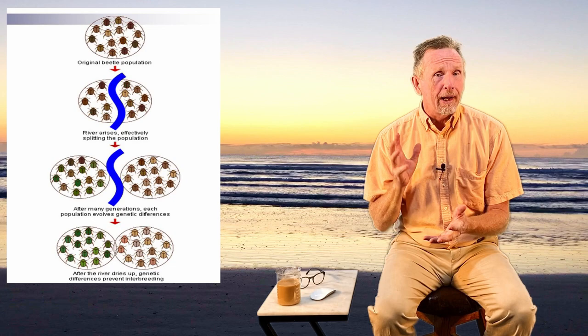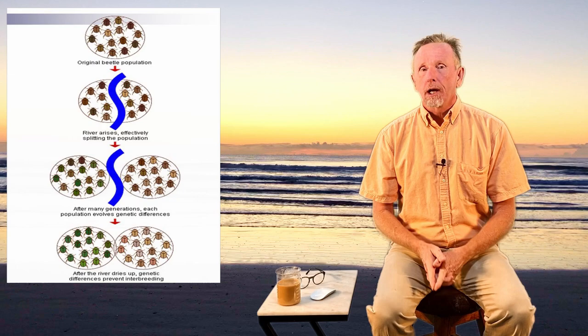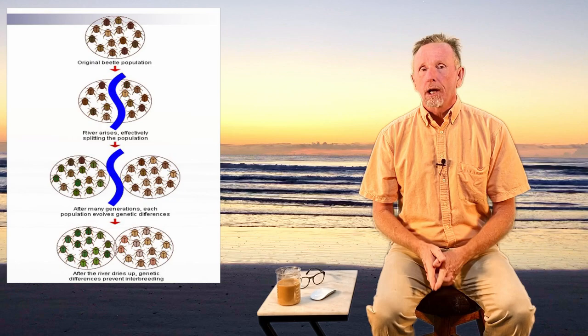Geographic isolation can happen many ways: a shipwreck, birds flying to a new area and not returning, animals carried downstream by a river, storms blowing insects off course, earthquakes, or lava flows separating populations. There has to be some sort of geographic isolation, and then reproductive isolation follows.